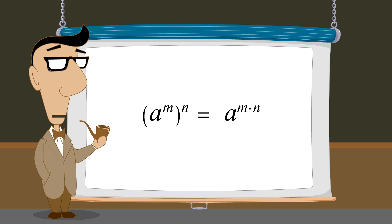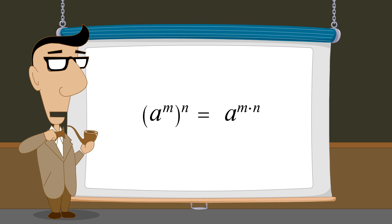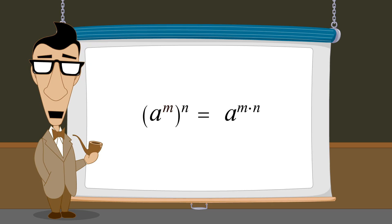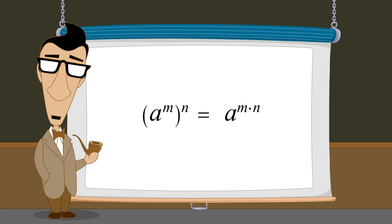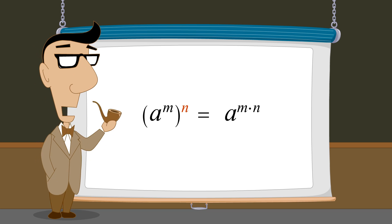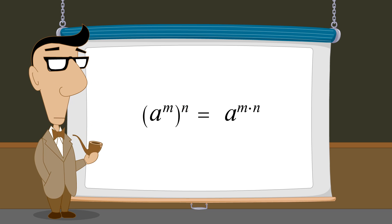So as a general rule, if we take any term with an exponent of m and raise that exponential term to the nth power, we can multiply the two exponents.